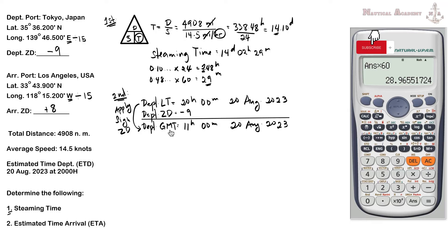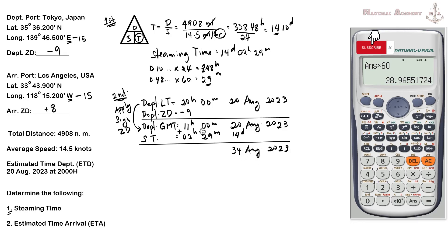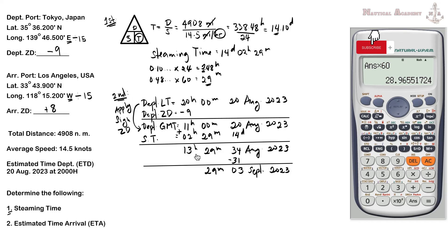After finding the departure GMT, we add the steaming time. The 14 days are applied to the date, the 2 hours and 29 minutes are aligned with the hours and minutes columns. Starting with minutes: 00 + 29 = 29. Hours: 11 + 2 = 13 hours. Date: 20 + 14 = 34 of August. Since August only has 31 days, we subtract 31, giving us the 3rd of September 2023. Our arrival GMT is 13:29 on September 3, 2023.